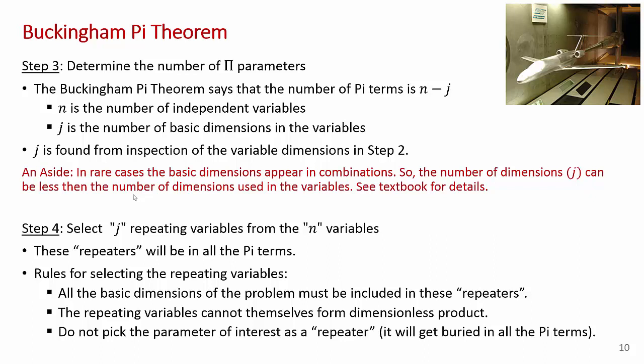Step 4 is to select j repeating variables from the total list of n variables. These become so-called repeaters and they appear in all your dimensionless pi terms. There are three rules for selecting repeaters: first, all the basic dimensions in the problem must be included in the repeaters; second, the repeating variables themselves cannot form a dimensionless product; and third, you do not want to pick the dependent parameter of interest — like the drag on the plate — as a repeater, because it will get buried in all the pi terms.